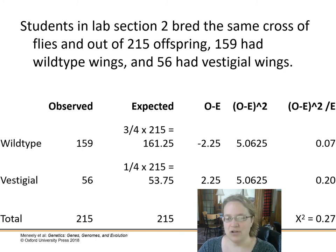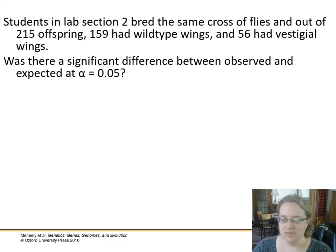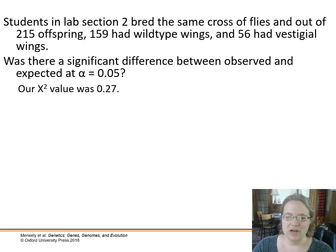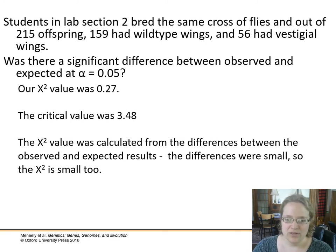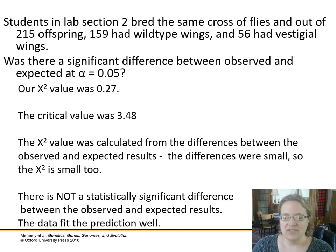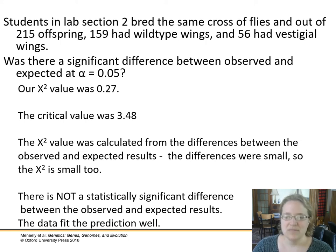We fill in the rest of the chart — observed minus expected, squared, then divided by expected — and add it all up. We get a chi-square value of just 0.27, which is very small. Students in lab section two had very small differences from what was expected. That value is well under the critical value of 3.84, so there is not a statistically significant difference between observed and expected results. The data fits the prediction.